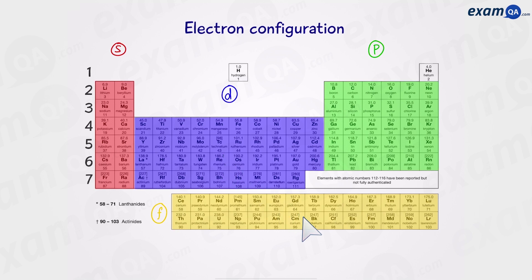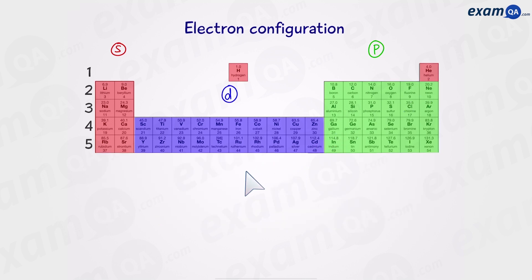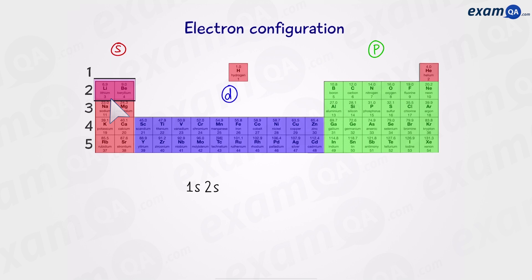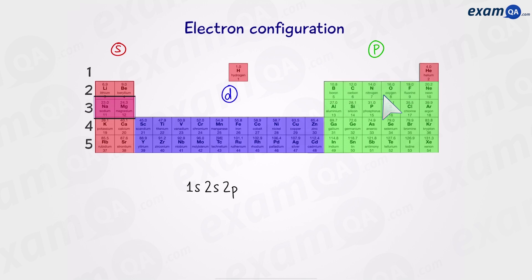We're going to use this to help us do the electron configuration for any element. For the purposes of electron configuration, hydrogen and helium are both treated as s block elements. We're going to focus on the main section of the periodic table, as 90% of questions involve this section. Here we have the 1s subshell — 1 because it's the first shell and s because it's an s block element. Over here we have the 2s subshell, then the 2p subshell, followed by 3s and then 3p.